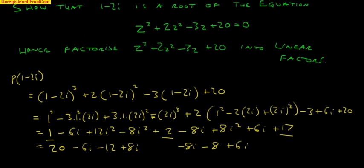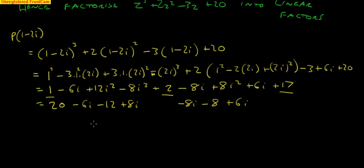OK, I'm just about to get there and hopefully it's all going to work out. Let's get the numbers part here. I've got 20 minus 12 minus 8 which fortunately does equal 0, and I've got minus 6i plus 8i that's 2i minus 8i plus 6i. And fortunately that does equal 0, 0, as required.